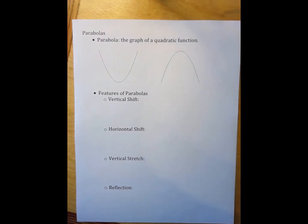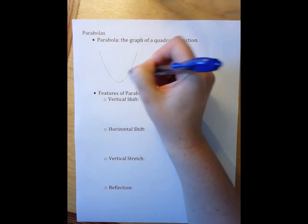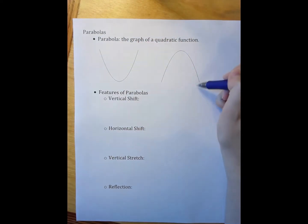These notes are about parabolas, just a general introduction to what we know about parabolas at this point in the module. So parabolas are the graph of a quadratic function. In layman's terms we talk about this as a U shape or an upside-down U shape.